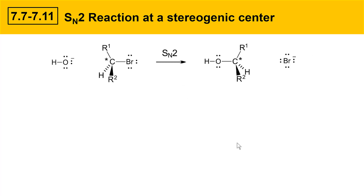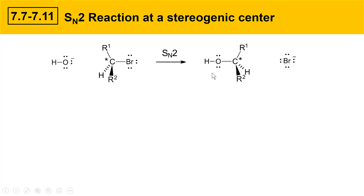Here's an example of an SN2 reaction at a stereogenic center. We've got an OH⁻ hydroxide nucleophile, and an alkyl halide that has four different groups attached to the central carbon: the bromine leaving group, a hydrogen, an R1 group, and an R2 group different from R1. When four different groups are present, that's a stereogenic center, indicated here by a star. When the SN2 reaction happens, the nucleophile takes the place of the leaving group but also inverts the configuration of that carbon. These two species are like pseudo-enantiomers — they have different stereochemistry from each other, as inverted products.